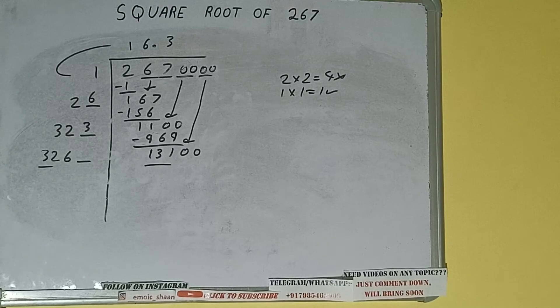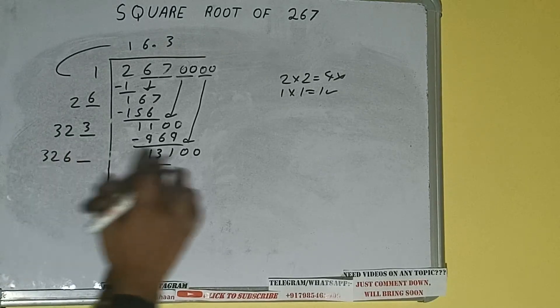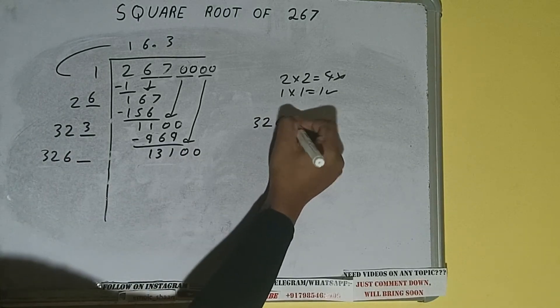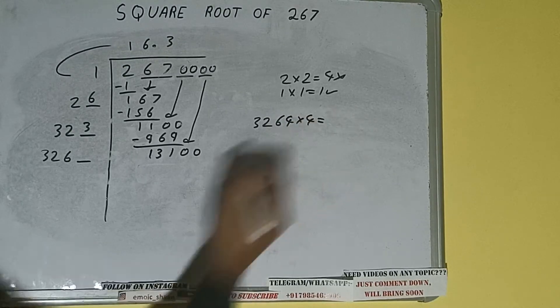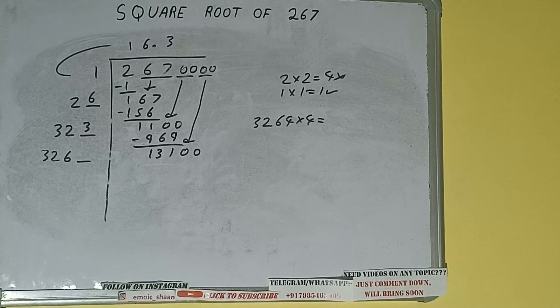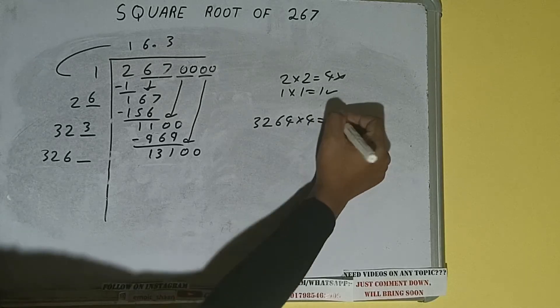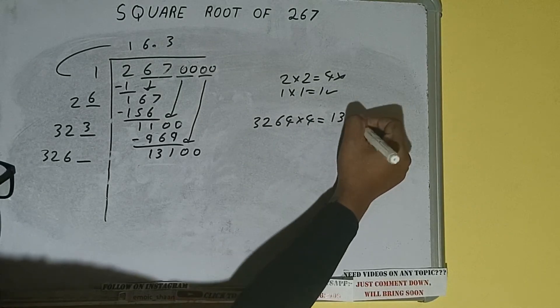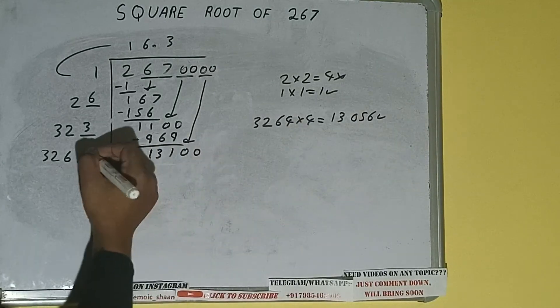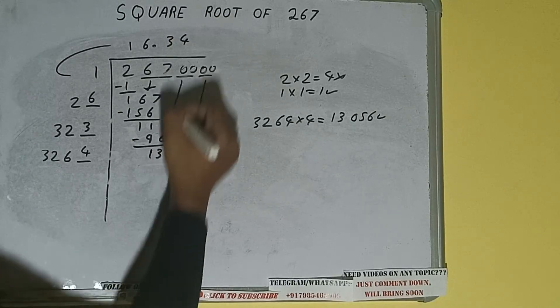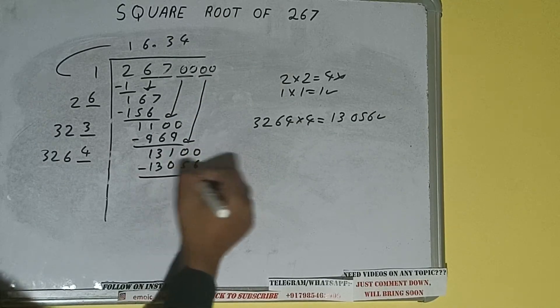So 32 four times is 128, so we can try four times. 3264 into 4 we can try, and we'll be having 13056, which is good to take. So four here and four here, 13056 subtract, 44 will be left.